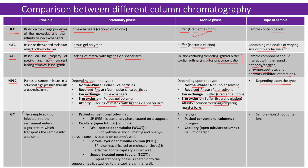In gas chromatography, the sample solution injected into the instrument enters a gas stream which transports the sample into a column. The stationary phase depends on the column type. For packed conventional columns, stationary phases like polyethylene glycol are coated on a support packed into the column. For capillary or open tubular columns, stationary phases such as polyethylene glycol, methyl and phenyl polysiloxanes are coated on the column wall. For porous layer open tubular columns, stationary phases like alumina, silica gel, or molecular sieves are attached to the capillary's inner wall. For support coated open tubular columns, liquid stationary phase is coated onto a support matrix attached to the inner wall. The mobile phase includes an inert gas — nitrogen for packed columns, helium or argon for capillary open tubular columns.